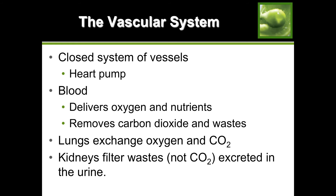The vascular system: your circulatory system is a closed system of vessels with the heart as the pump. Blood delivers oxygen and nutrients and removes carbon dioxide and waste. Carbon dioxide is exchanged for oxygen in the lungs. The kidneys filter the remaining waste from the blood and it's excreted in the urine, which we'll discuss in chapter six.